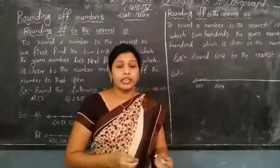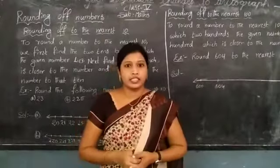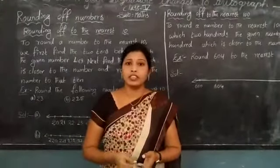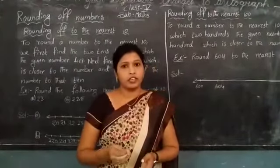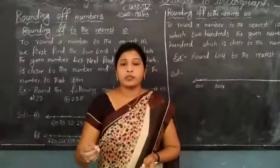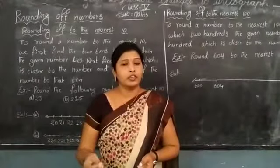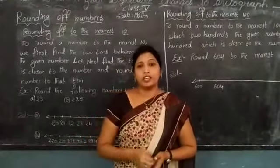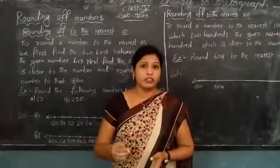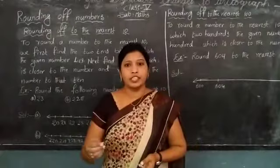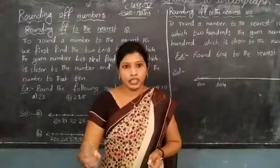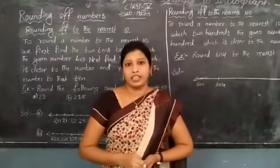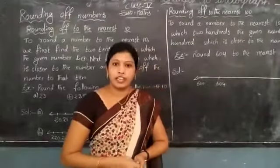So in both cases, numbers have been rounded. When we round a number, we give the approximate number to the exact number. The rounded number gives the value of the number which is closer to the actual number.